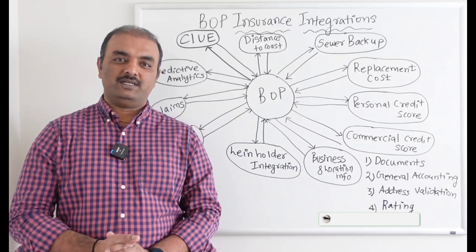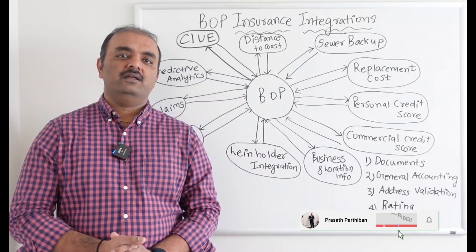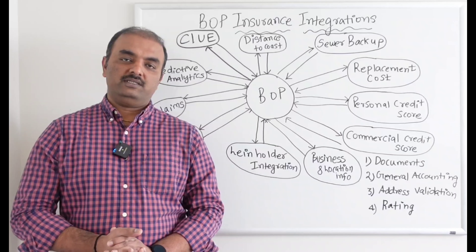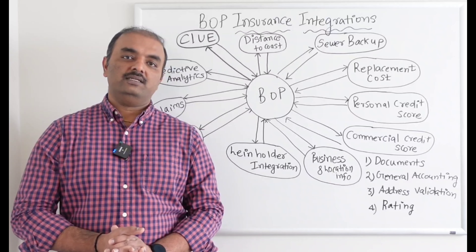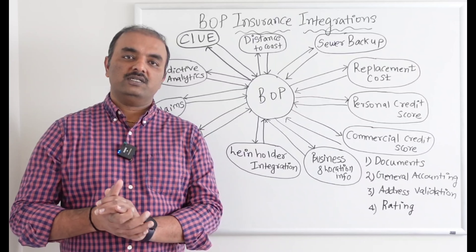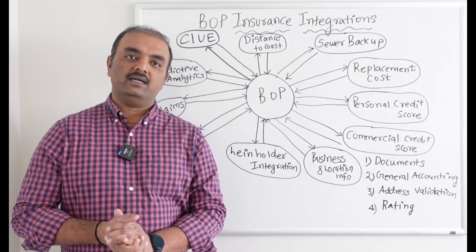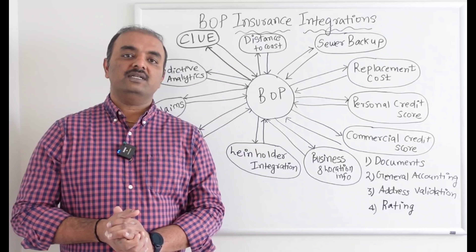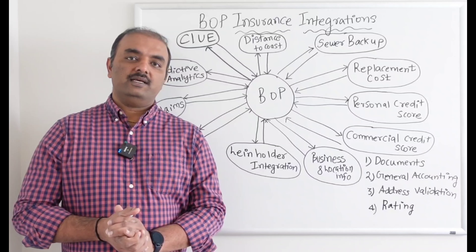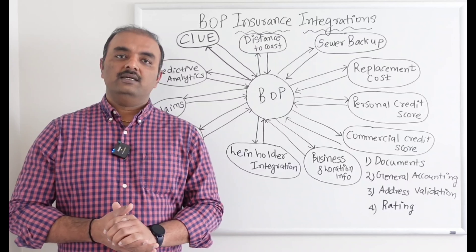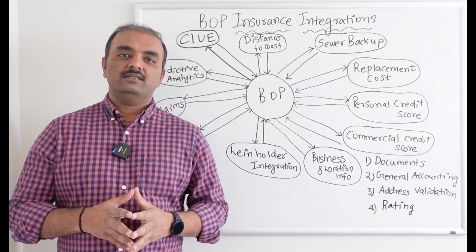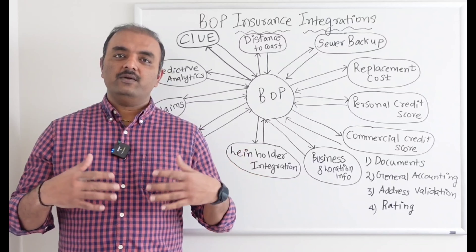Hi everyone, this is Prashal Parthiban. In my last training video, I covered what is a Business Owners Policy, which is a combination of first party (property damage insurance) as well as third party (liability insurance), plus other insurance types like business income, theft, etc. Now I am going to talk about different integrations needed for a Business Owners Policy. This is an initial, generic set of integrations — it can grow and varies by insurance carrier.